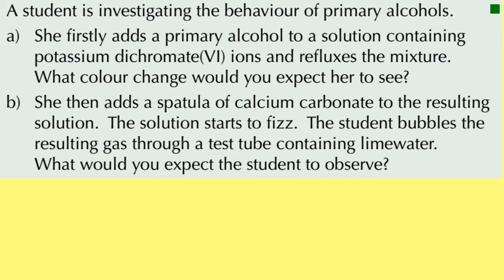A student is investigating the behaviour of primary alcohols. She first adds a primary alcohol to a solution containing potassium dichromate, an oxidising agent, and then refluxes the mixture — meaning she condenses any vapours that come off and lets them drip back into the reaction mixture so they have more time to react. What colour change would you expect to see? Potassium dichromate 6+ is orange and it's going to be reduced, turning into a green colour.